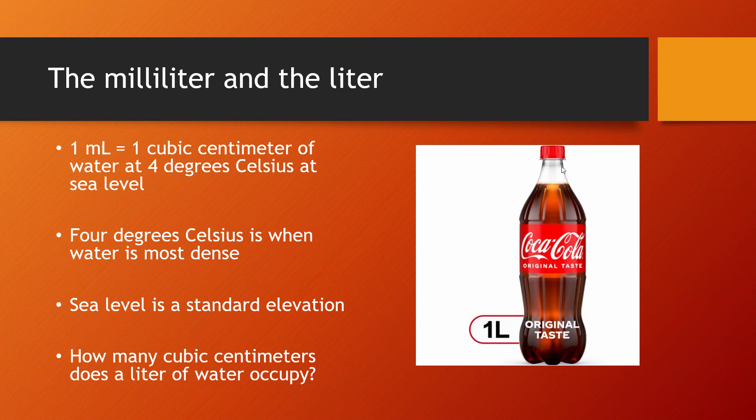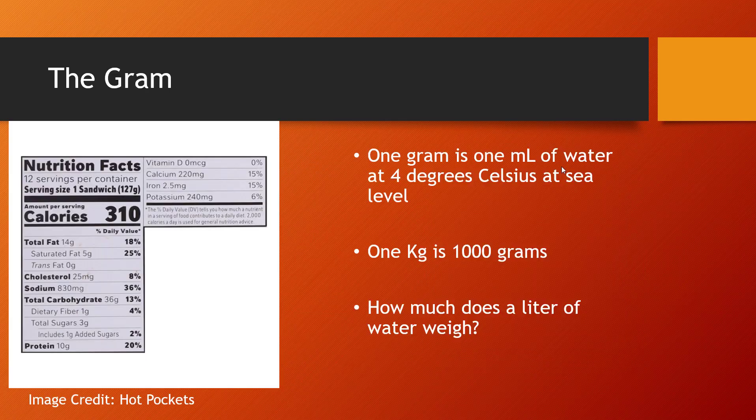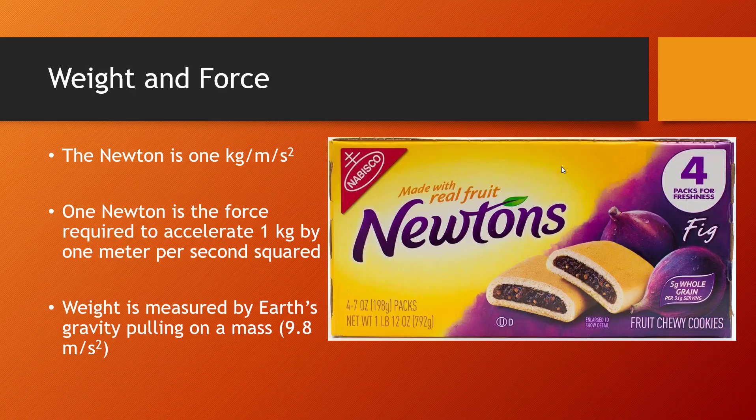So one liter is going to be 1,000 milliliters. One gram is how much that one milliliter of water is going to weigh. One kilogram is 1,000 grams. And we already see grams on the side of this hot pocket nutrition facts label — nutrition there being somewhat generous.